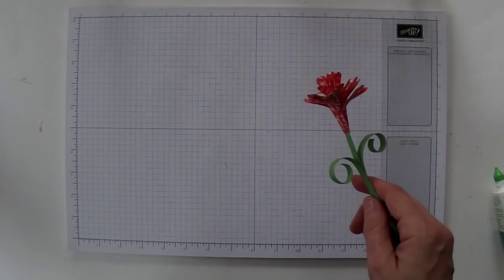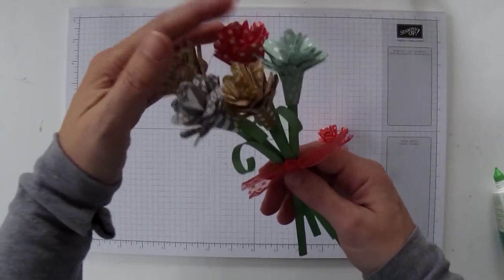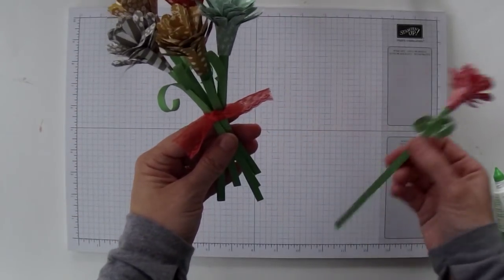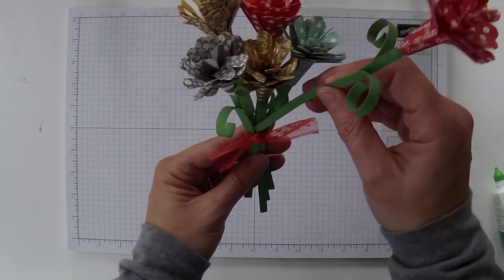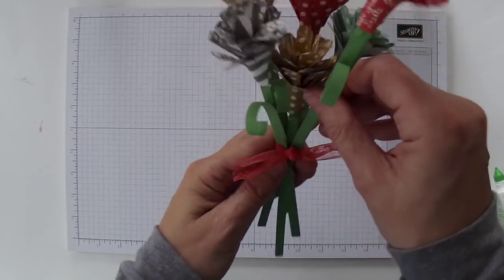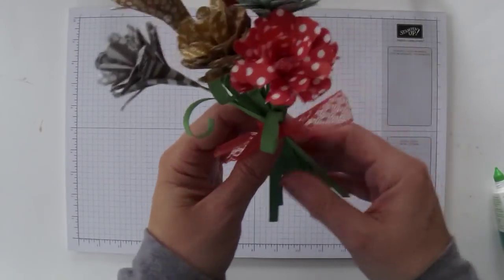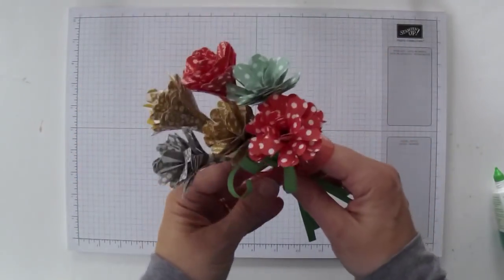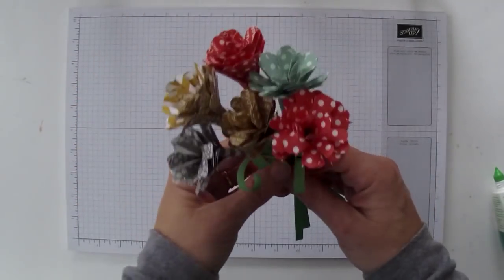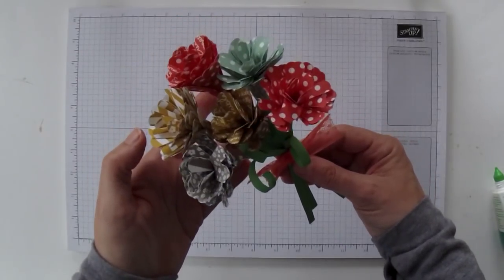And then what I did is I made a bunch of these and tied it up with some dotted scallop lace trim. And then what you can do is tie them up. I'm just going to feed this one into my little bouquet here. Like that. And there you go. It's a cute little bouquet and you could put it in a little vase if you wanted to, or you can just give it like this with the ribbon around it.